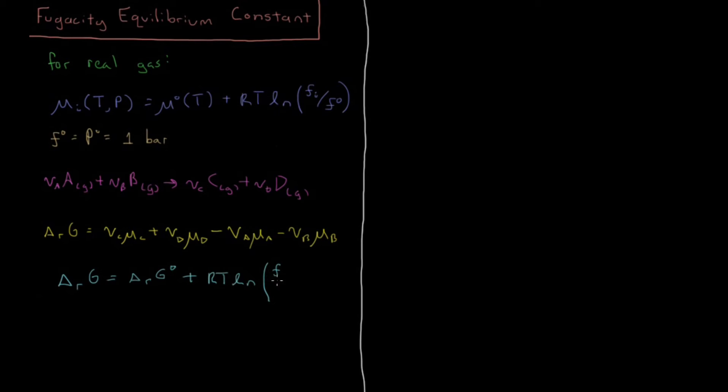So we're going to have Fc to the nu C, fugacity of product C to its stoichiometric coefficient, same thing for product D, divided by the fugacity to the power of stoichiometric coefficient for the reactants, A and B.